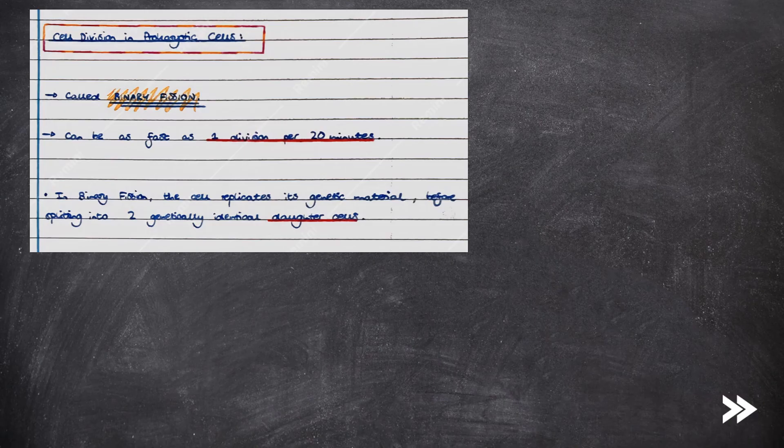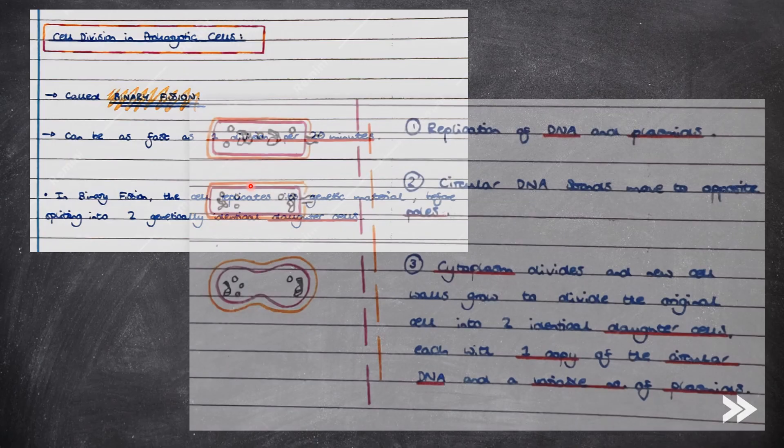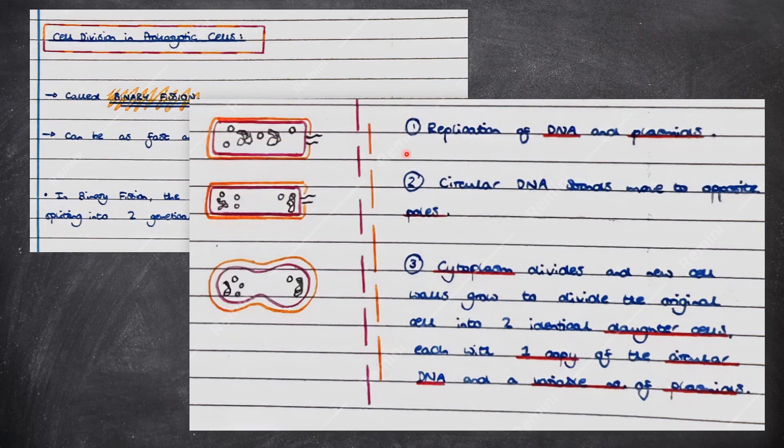Finally, we'll have a look at cell division in prokaryotic cells, which is called binary fission. This can be as fast as one division every 20 minutes. In binary fission, the cell replicates its genetic material before splitting into two genetically identical daughter cells. In binary fission, first the bacterium replicates its DNA and plasmids. The circular DNA strands move to opposite poles. Finally, the cytoplasm divides and new cell walls grow to divide the original cell into two identical daughter cells, each with one copy of the circular DNA and a variable number of plasmids.